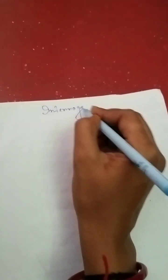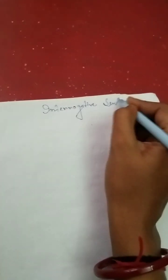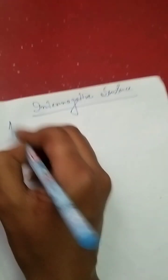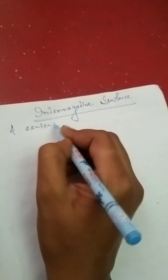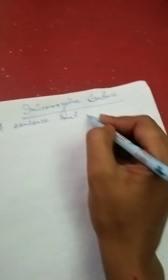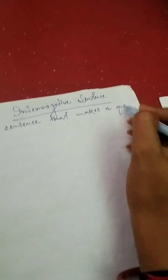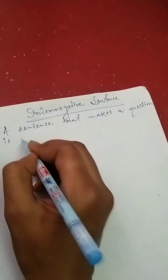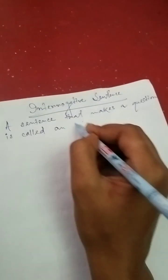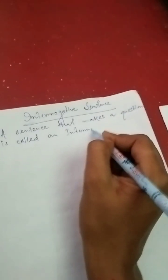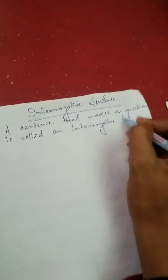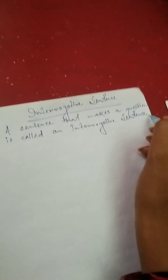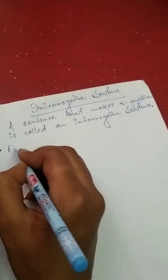Interrogative sentence. The definition is: a sentence that makes a question is called an interrogative sentence. Here are some functions and features.